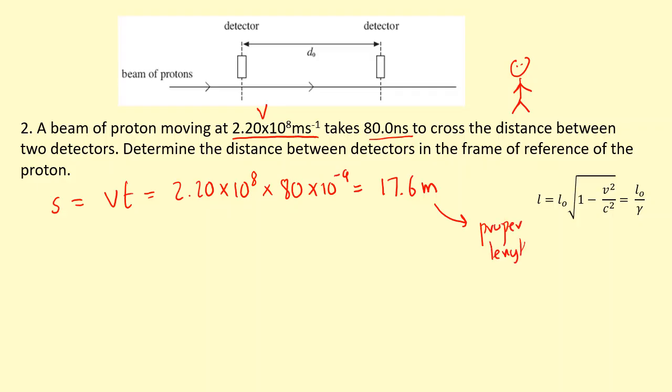But for the beam of protons, the distance between detectors would appear narrower, just like how the track would appear narrower for Usain Bolt. So what I need to do is I need to take this. First, let's work out gamma as well.